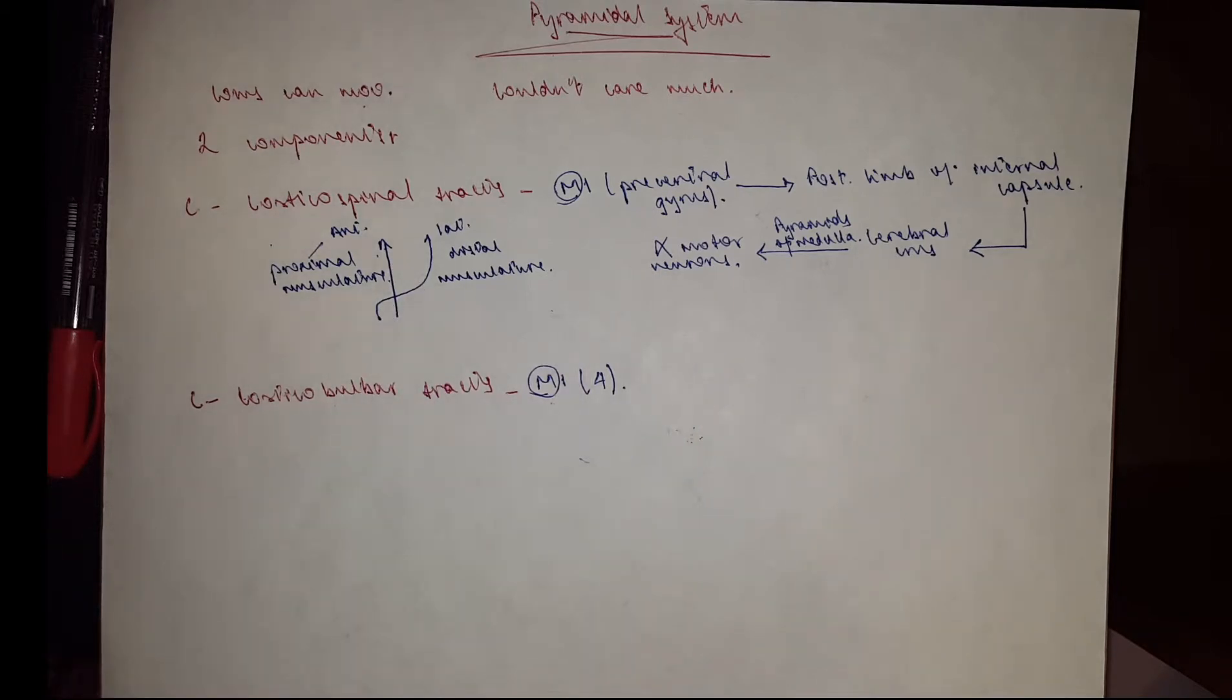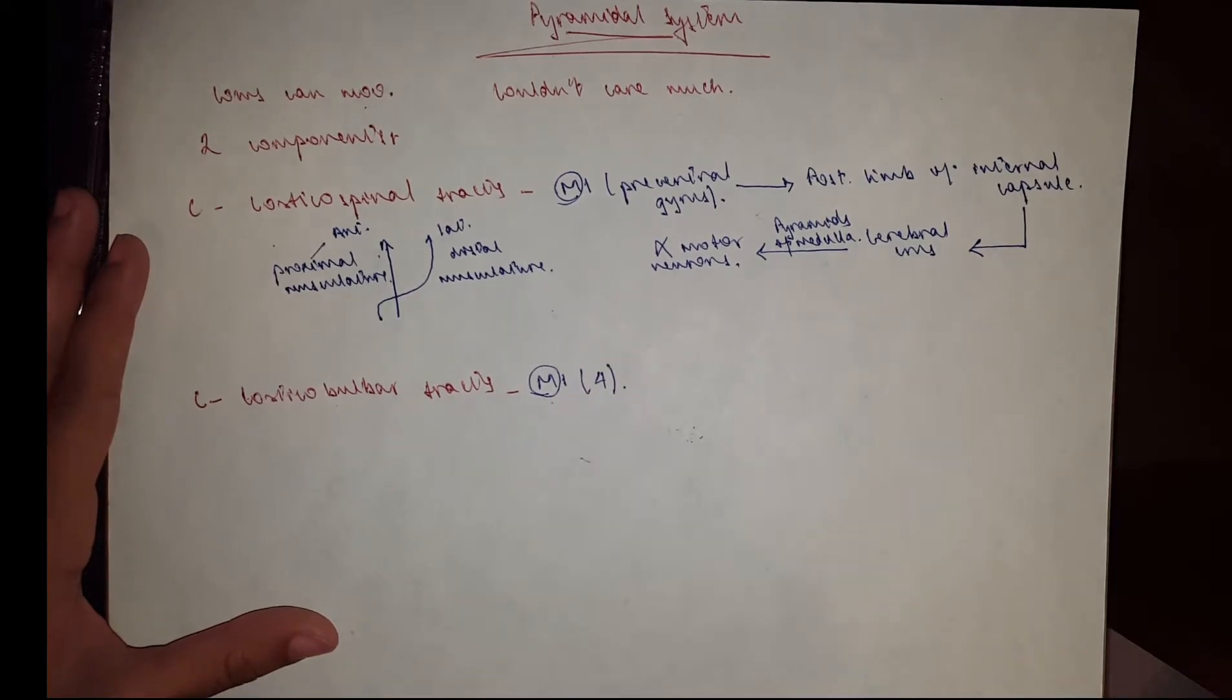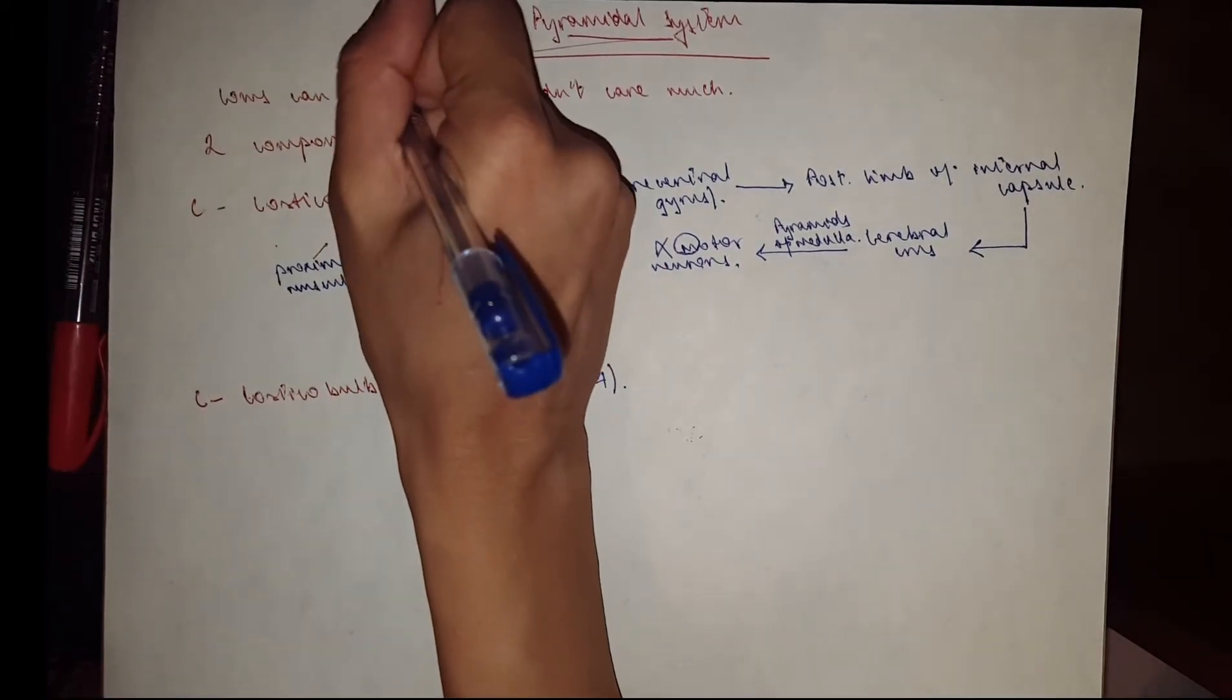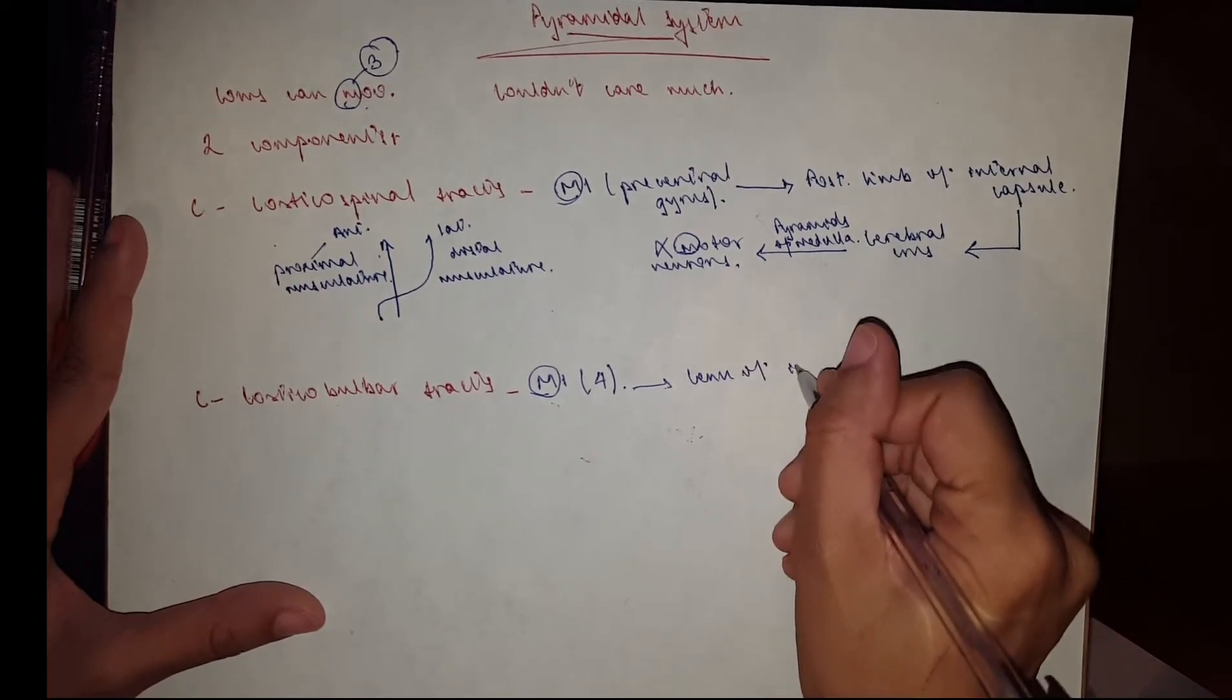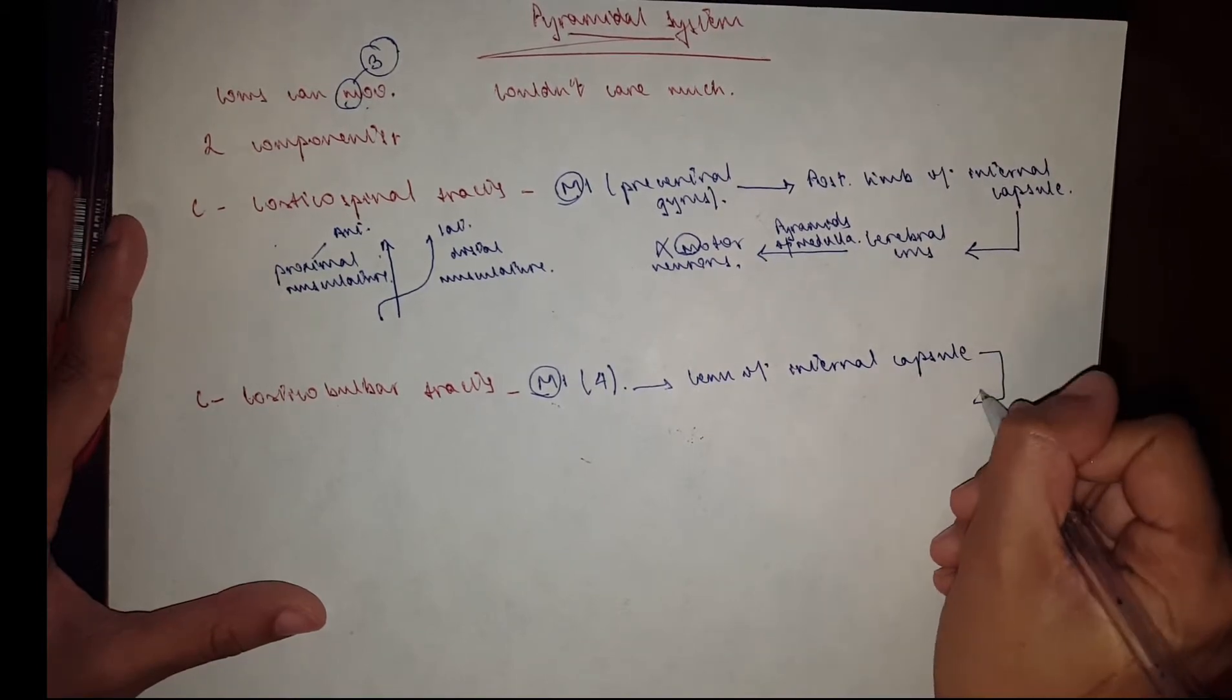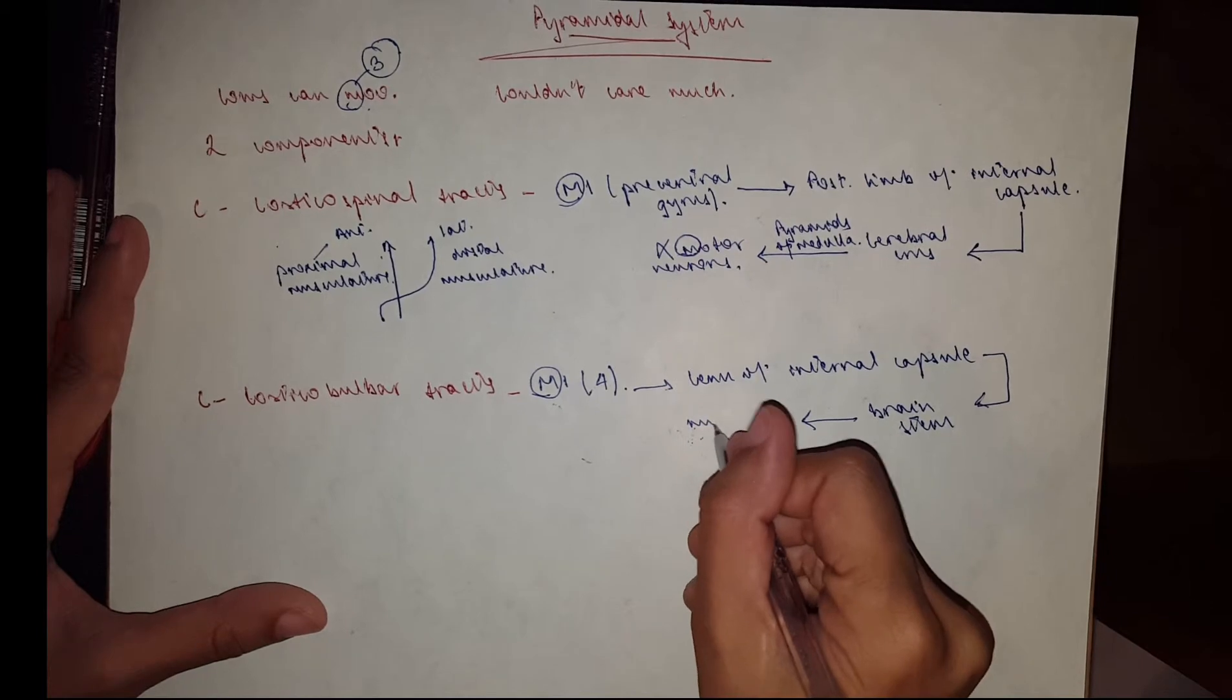That is the corticospinal tract. Then we move on to the corticobulbar tract, which is quite similar. So we go from M1, and another M would be the motor, and then they go—these motor neurons go to the motor organs, of course. So you have three M's with this one. So from the motor you go to the genu, which is the neck of the internal capsule, then you pass the brainstem again, the pyramids of course, and then you go to the motor nuclei of the cranial nerves.